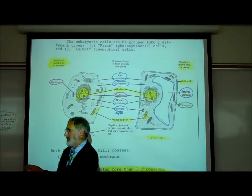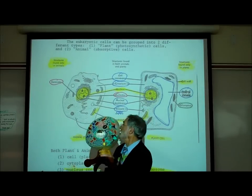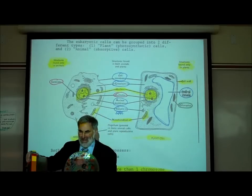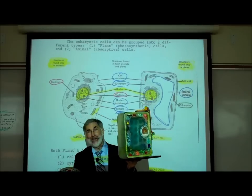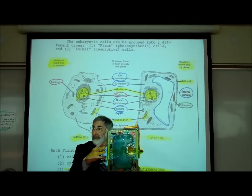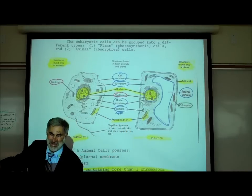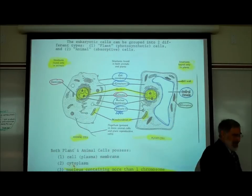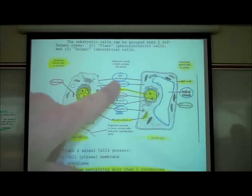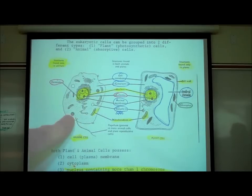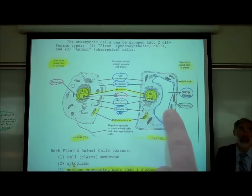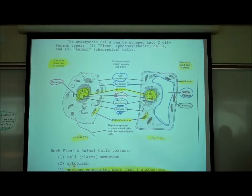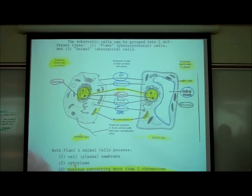We actually have models of this — a typical animal cell and a typical plant cell. If you're a kinesthetic learner who likes to learn by touching and feeling, you can touch and feel these models. A typical animal cell looks a lot like the cheek cells you may have looked at, and a typical plant cell looks like the elodea leaf cells. Let's see what they have in common and how they differ.